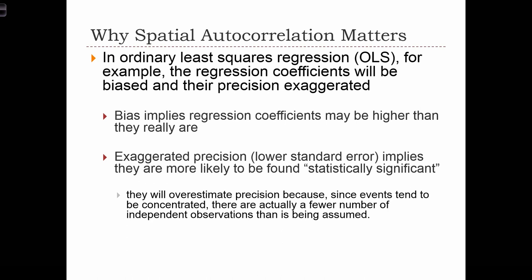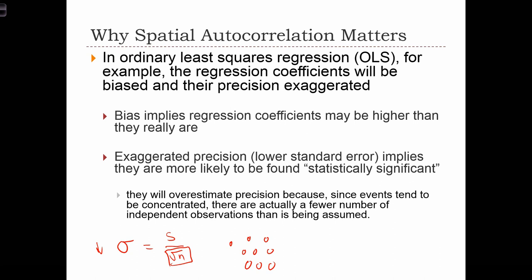Let's think about why we exaggerate precision. Recall that in all of our sample statistics, the standard error of our statistics is equal to the standard deviation of the statistic in the sample divided by the square root of n. So when we have a larger sample size, our standard error is going to go down. If we have 9 independent points, we can use the square root of 9 in this equation to calculate the standard error. But if these data values aren't independent — if knowing one data value helps us know what nearby values are —